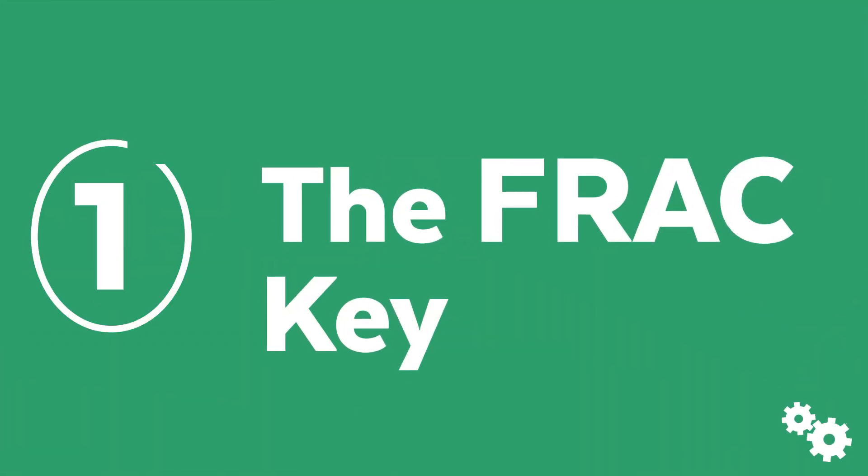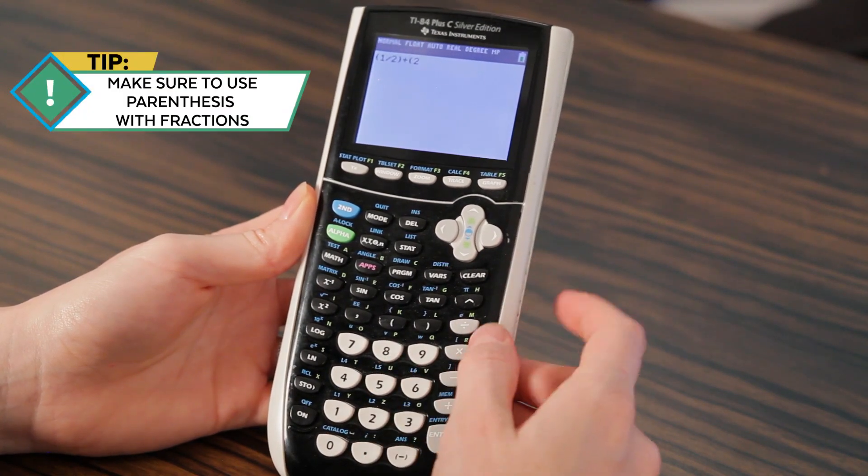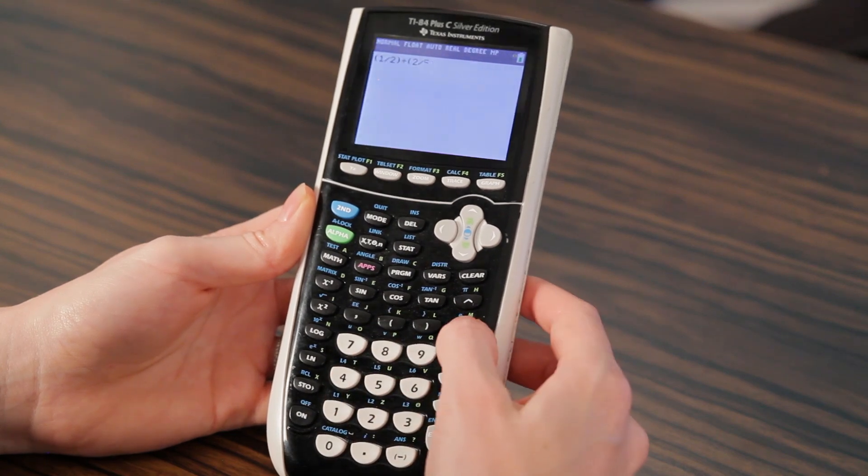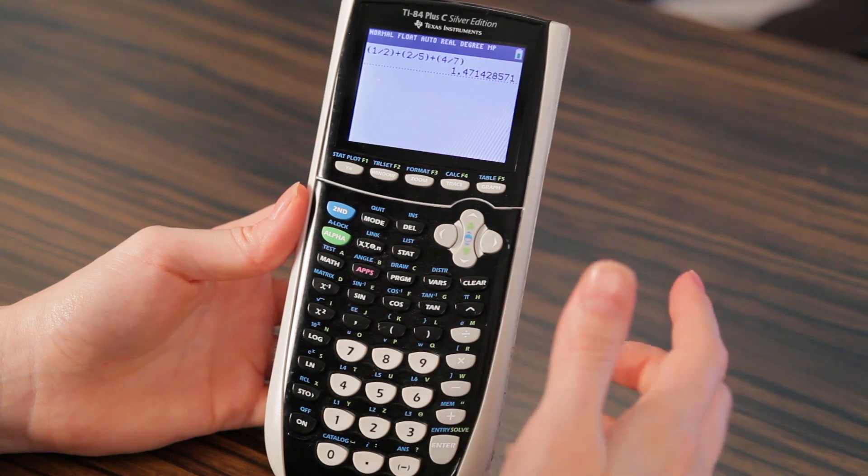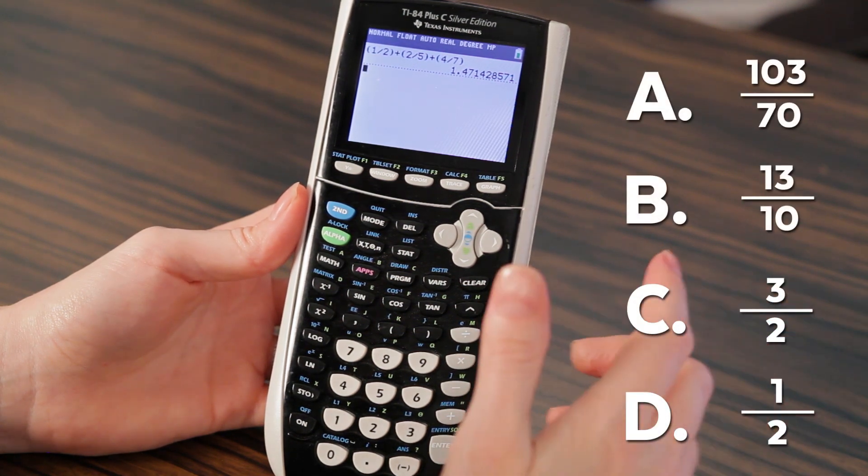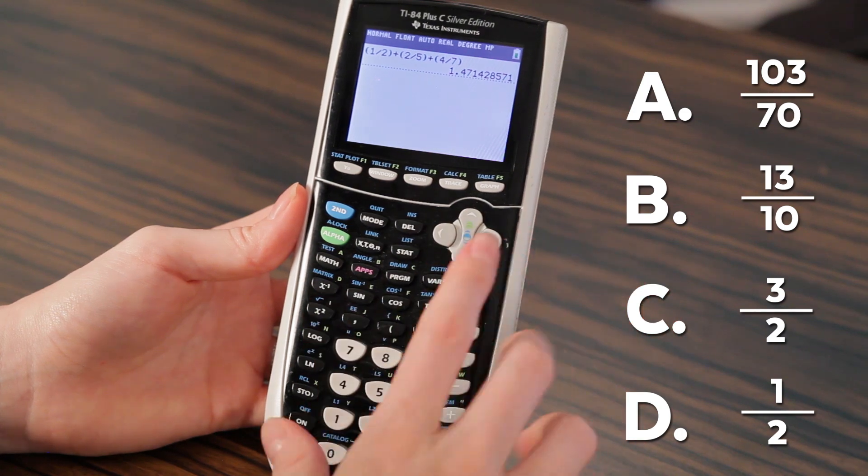Hack number one: the frac key. Frac is basically a wonderful little thing you can press on your calculator that will turn any answer in decimal form into fraction form if it can be expressed as a fraction. I'm going to show you a problem this could come up on. Let's say we have to add one half plus two fifths plus four sevenths. Kind of ugly because you've got a two, a five, and a seven that's going to make for a really big ugly least common denominator. But my calculator can do all the heavy lifting for you. Here's the problem students run into: a lot of times all the answer choices are in fraction form, and when you do this in your calculator you get a decimal answer, and that's not what you want. Well, that's where this frac function comes to the rescue.